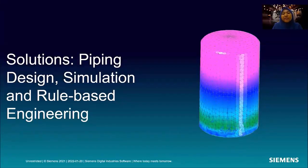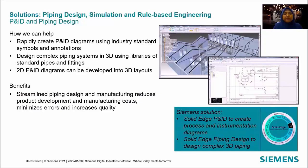Next is the solution for piping design, simulation, and rule-based engineering. In P&ID and piping design, Solid Edge modular plant design creates P&ID diagrams using industry-standard symbols and annotations. You can design complex piping systems using library and standard piping and fittings, and 2D P&ID diagrams can be developed into 3D layouts, reducing product development and manufacturing costs while minimizing errors and increasing quality.